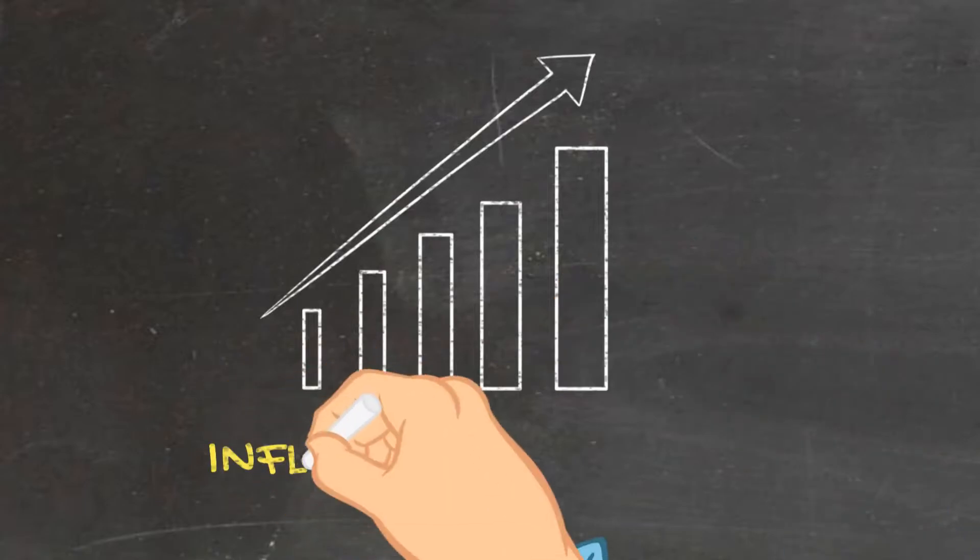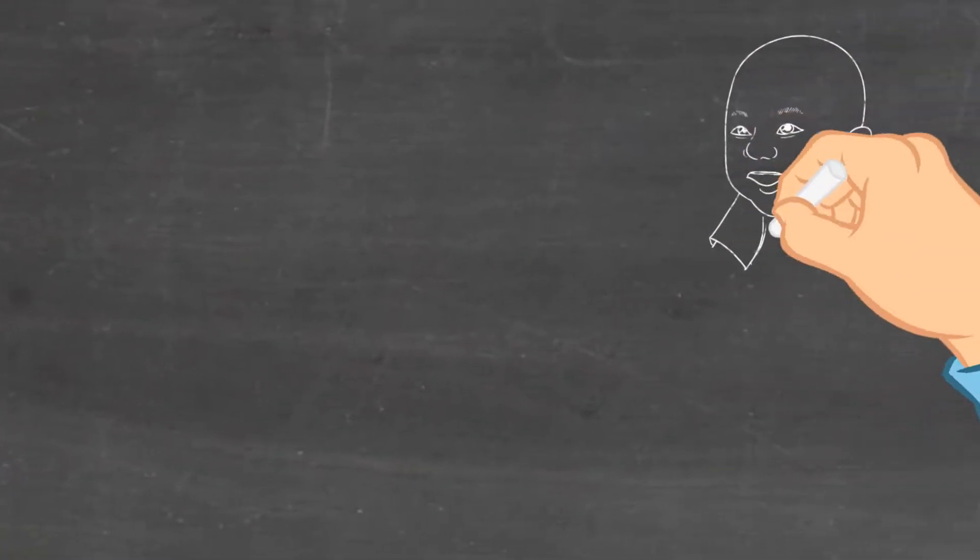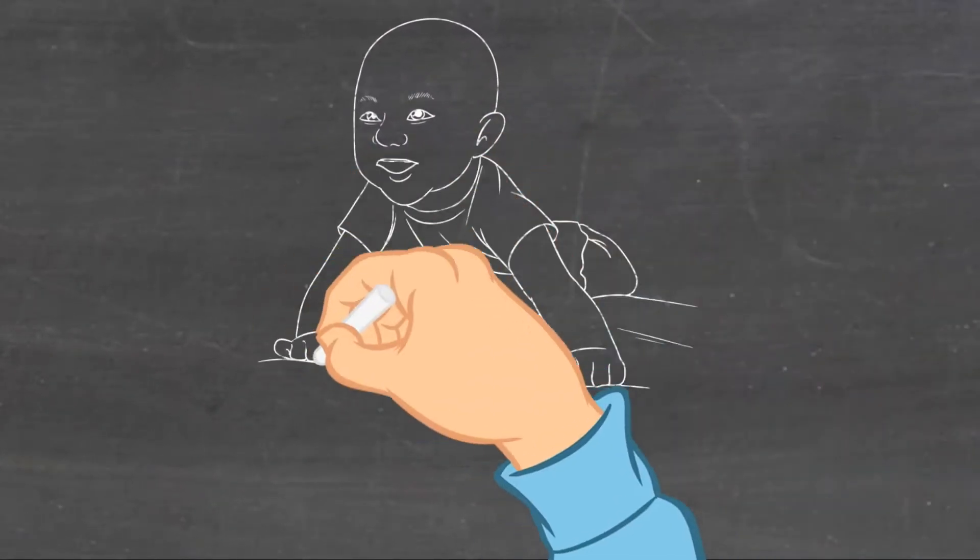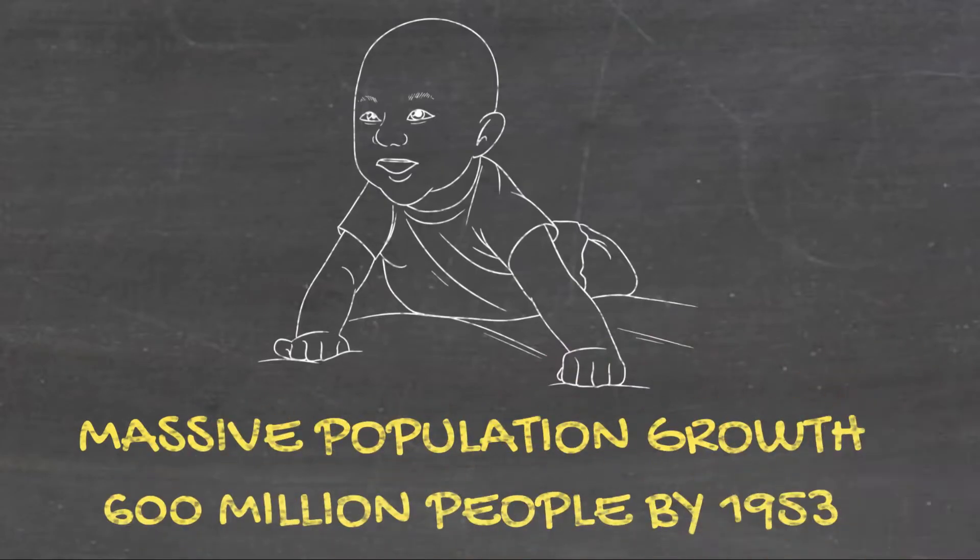War spending and financial mismanagement by the previous government had left China in a perilous financial state. In order for the needs of China's rapidly expanding population to be met, Mao would need to transform her into an industrial powerhouse.